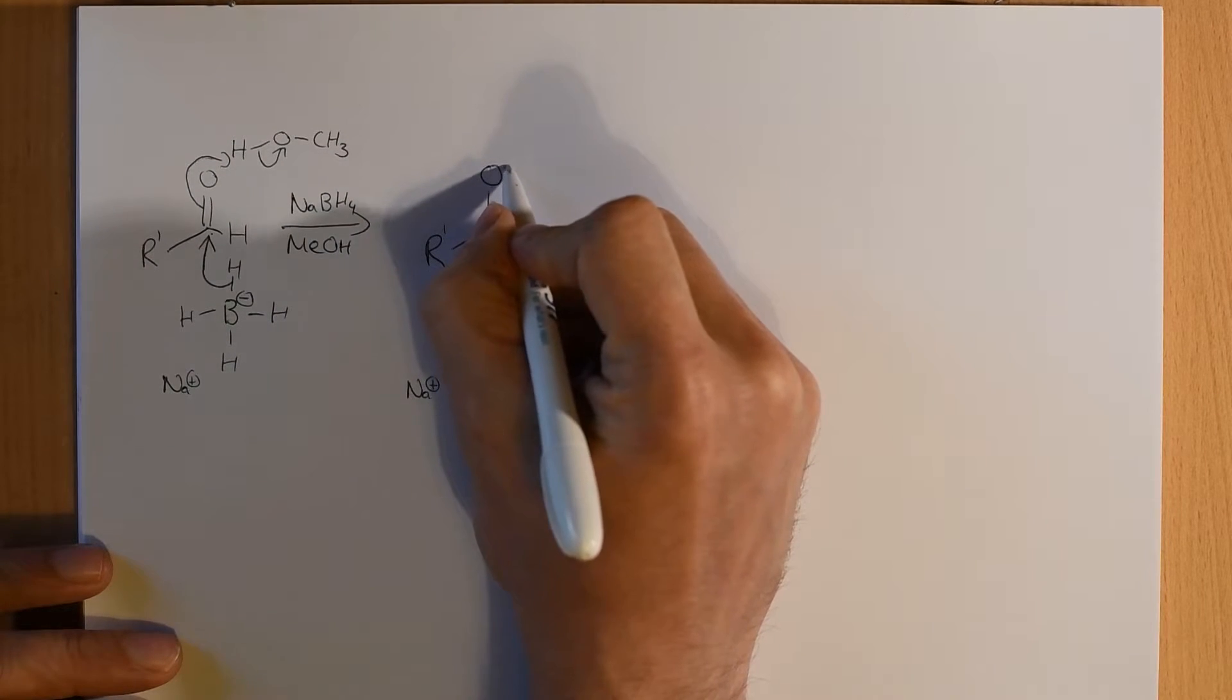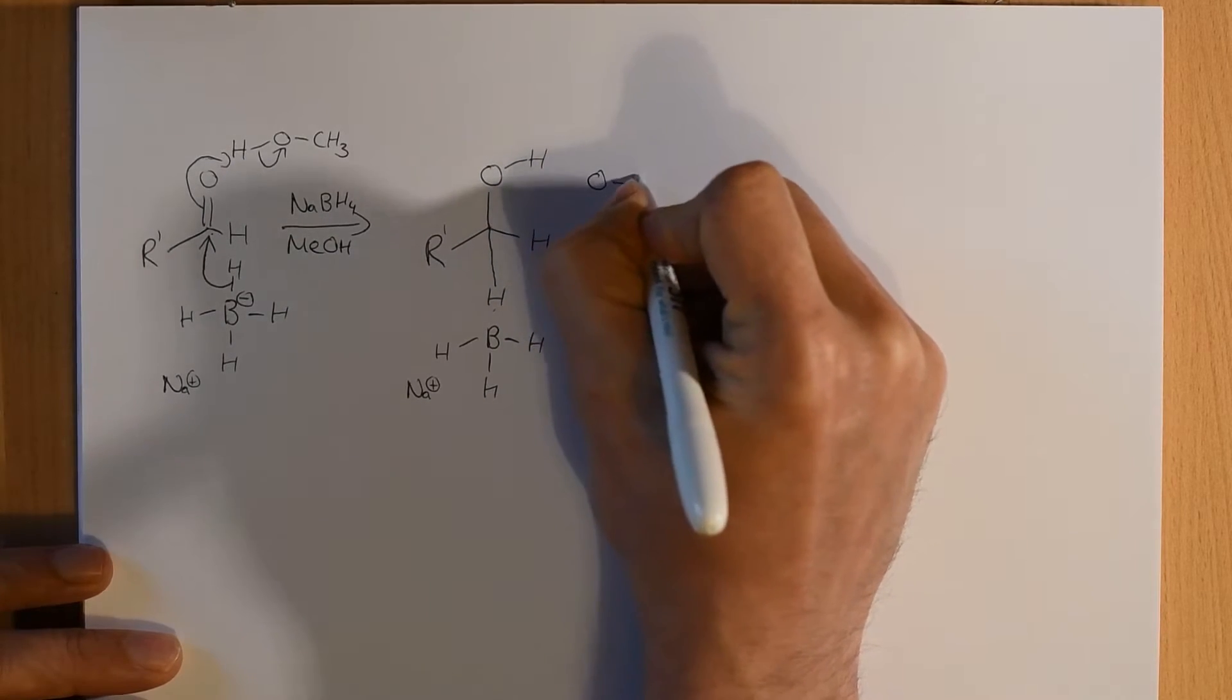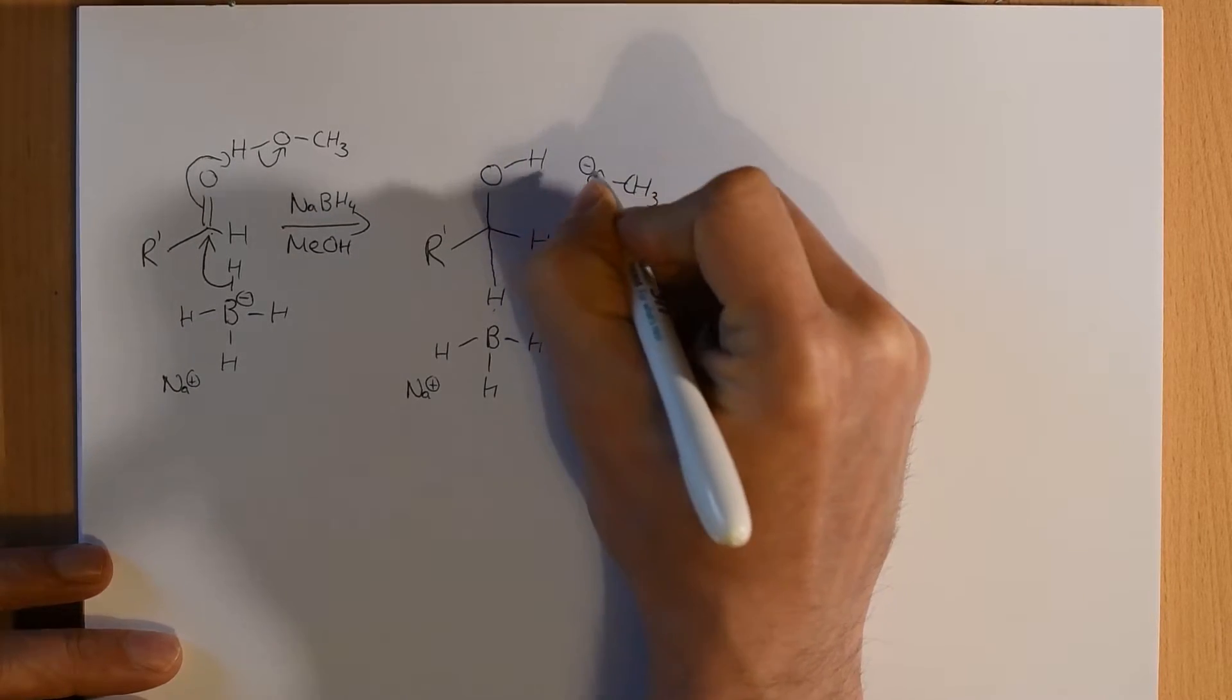This pair of electrons got moved up onto the oxygen and then deprotonated the local methanol. And the methanol itself is now a methoxide. So, OCH3, with a negative charge on the oxygen.